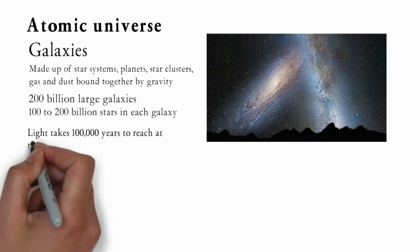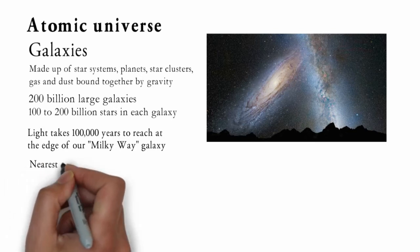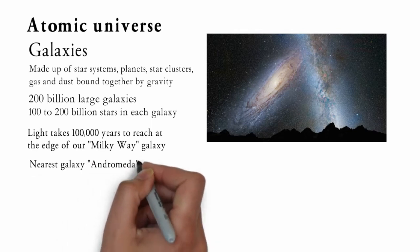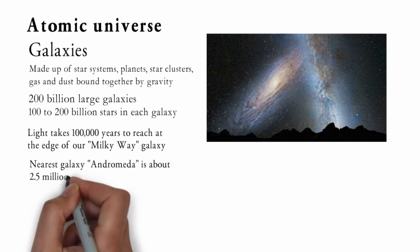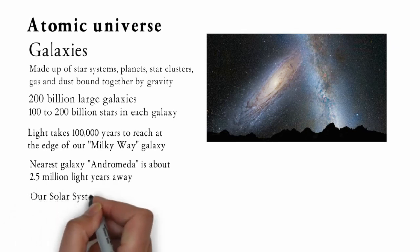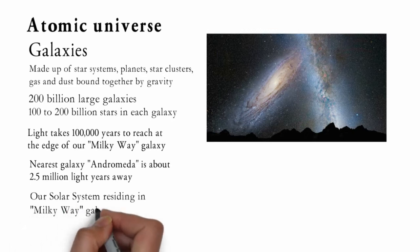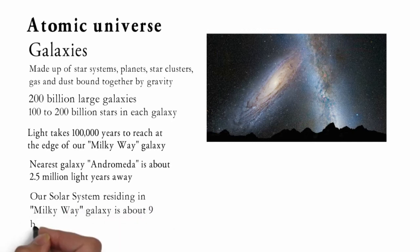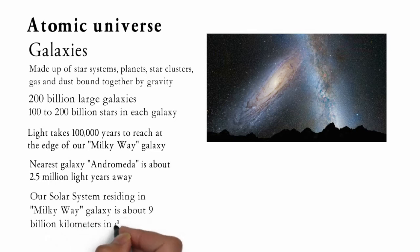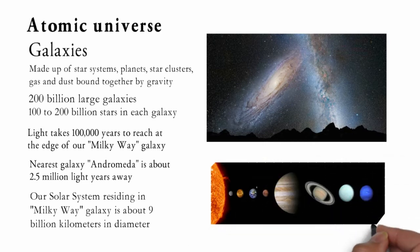Our solar system resides in a galaxy called the Milky Way. The Milky Way galaxy contains about 200 billion stars. It would take light 100,000 years to reach the edge of our galaxy. The nearest galaxy to ours is the Andromeda galaxy, which is about 2.5 million light-years away. To the outermost planet of our solar system, Neptune, the diameter of our solar system is about 9 billion kilometers. If we go even further, where the Sun's gravity is still dominant enough to make objects orbit around it, the diameter can be as large as 1.5 light-years.